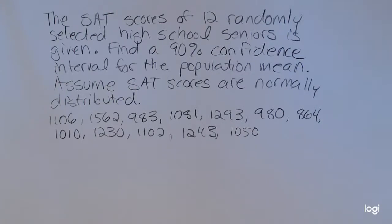In this example, I'm going to be finding the confidence interval for the population mean when the standard deviation or sigma is unknown. The SAT scores of 12 randomly selected high school seniors is given. Find a 90% confidence interval for the population mean. Assume SAT scores are normally distributed.